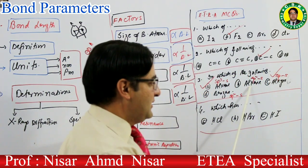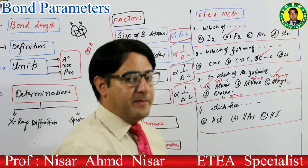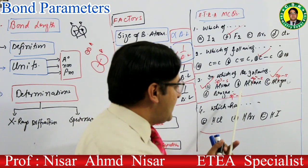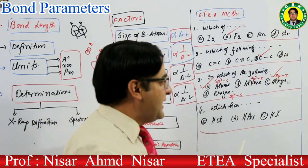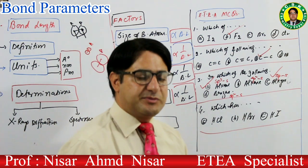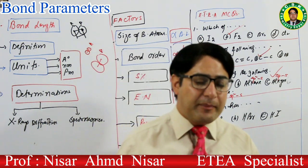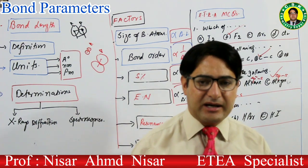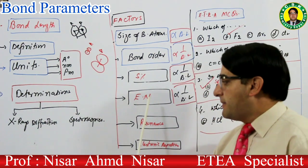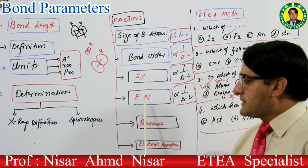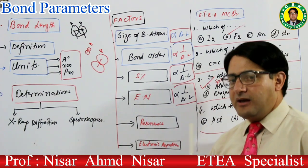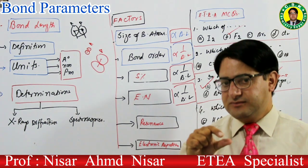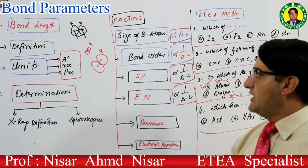اگر alkene اور benzene دونوں میں sp2-s overlap ہو تو کس کی bond length زیادہ ہوگی؟ اس کے لیے اگلے factor پہ جانا پڑے گا — electronegativity difference between bonded atoms۔ Electronegativity difference اور bond length کا inverse relation ہے۔